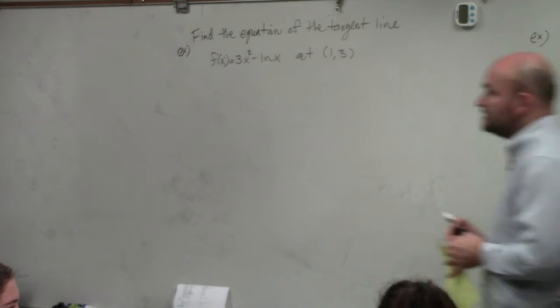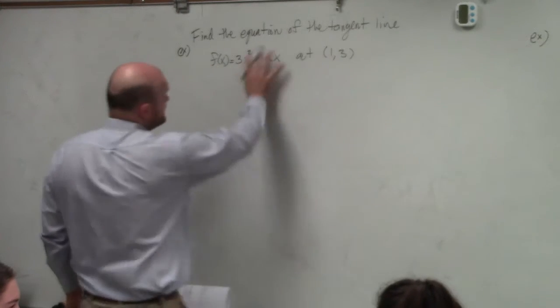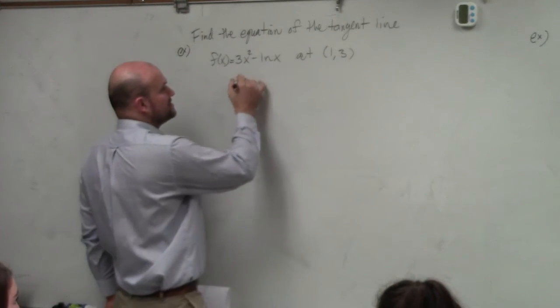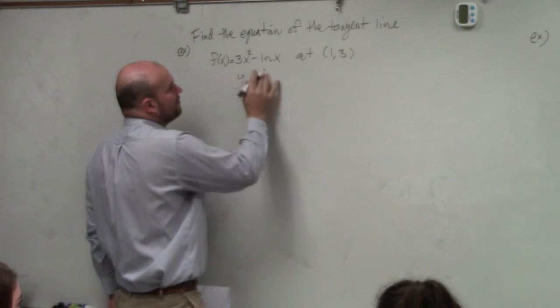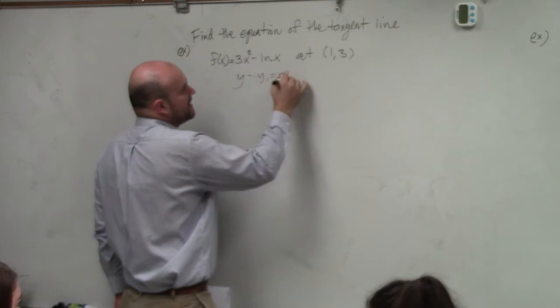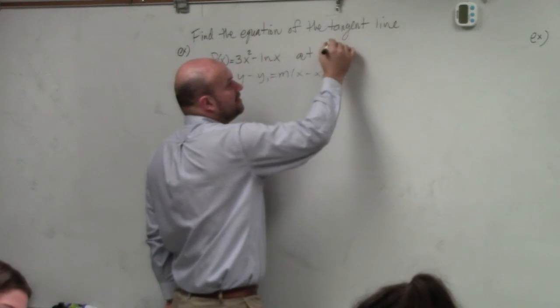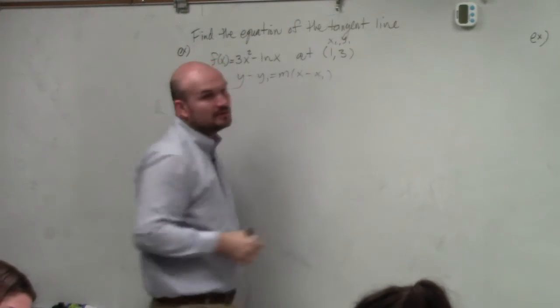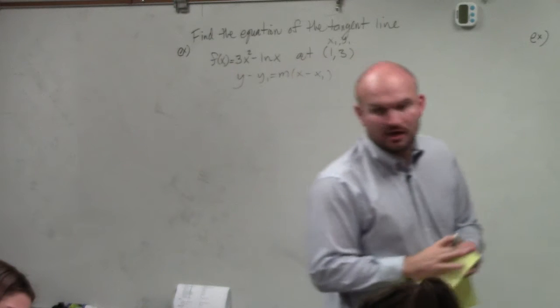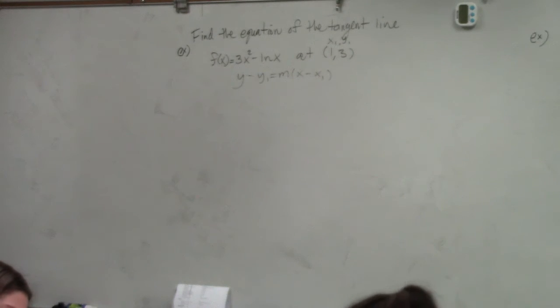So the first thing we know is, if you guys remember, just any time I see a tangent line, I'm always thinking y minus y1 equals m times x minus x1. Well, we already have x1 and y1, correct? So that's all already covered. The only thing that we need to do is find the slope.